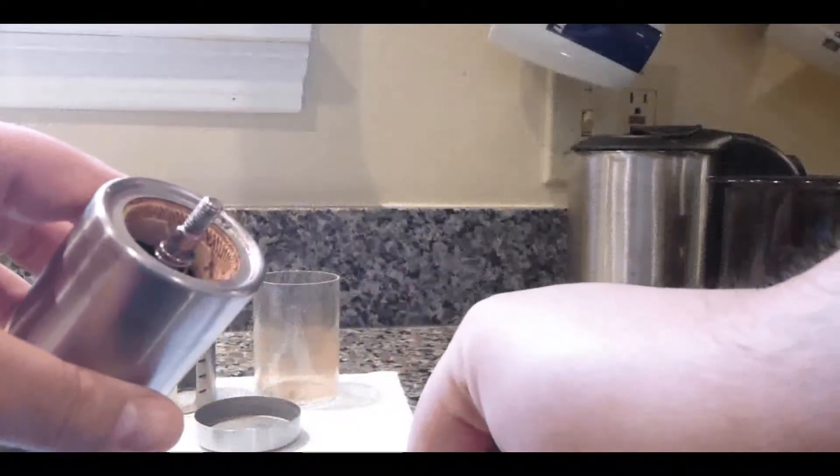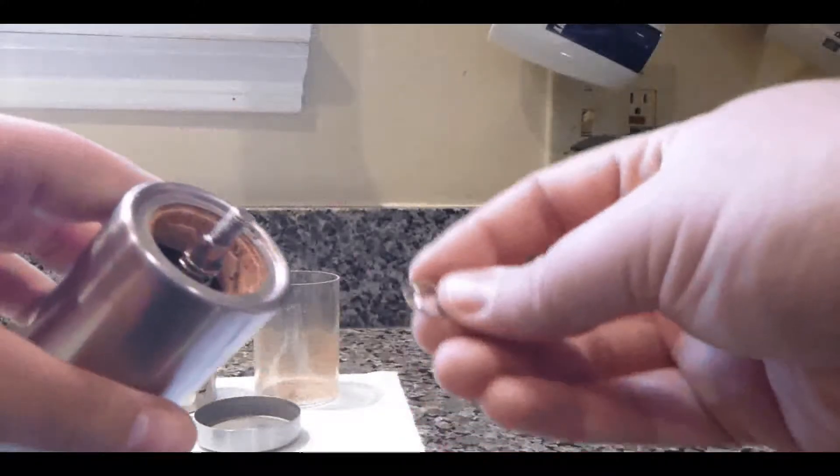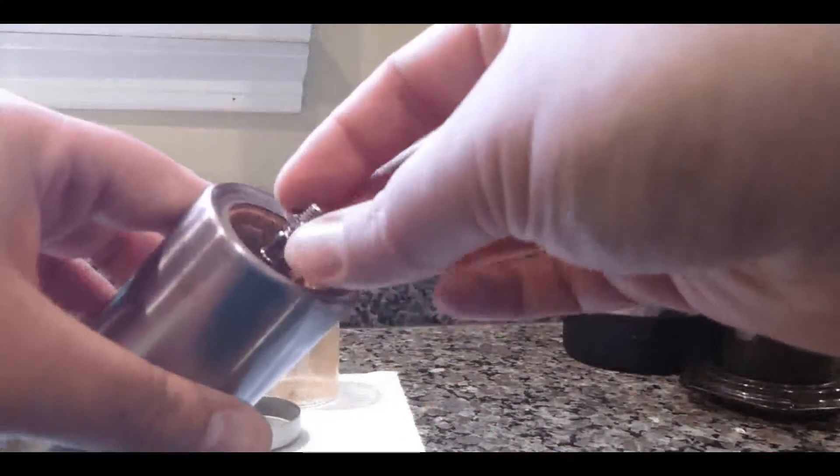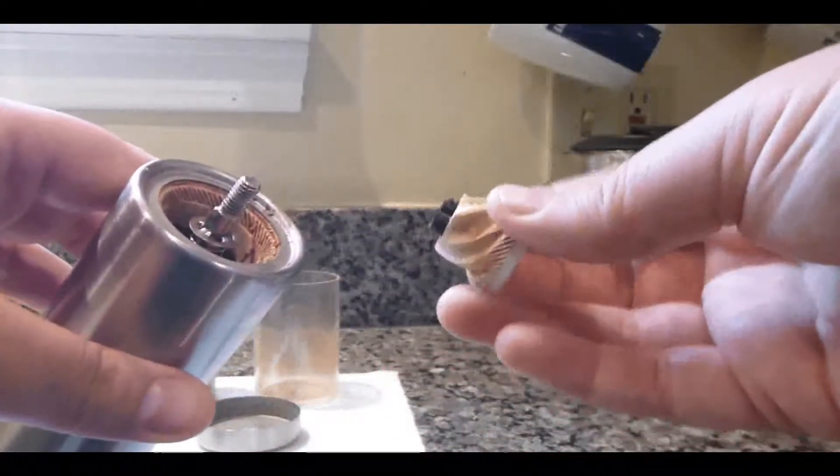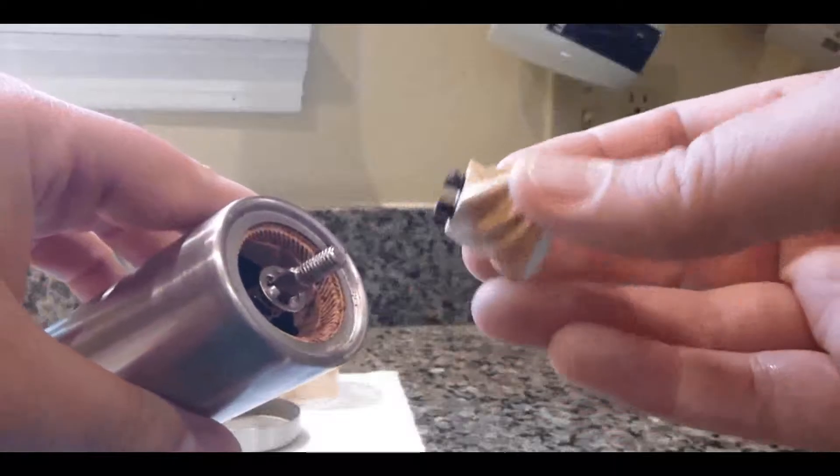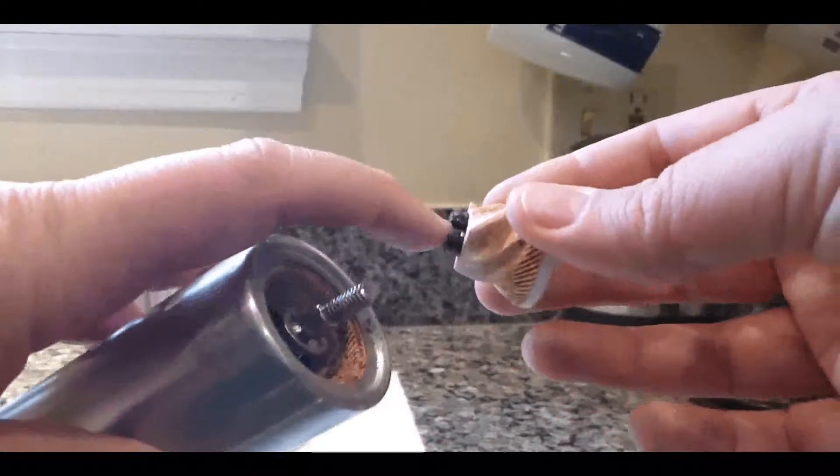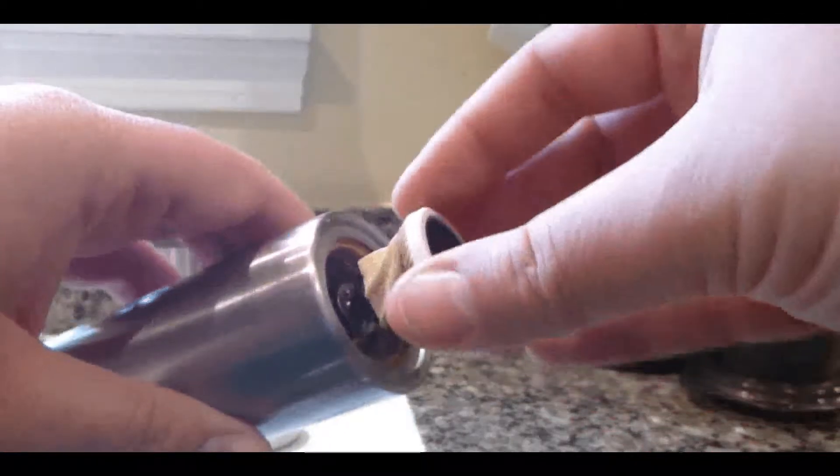Once you've finished cleaning, you'll place the spring back in place, place the small metal washer back in place, and you'll take the second part of the burr grinder and stick it in as such.